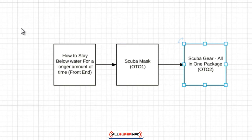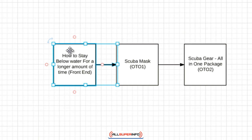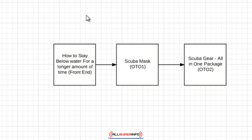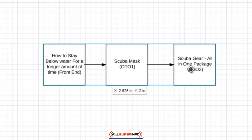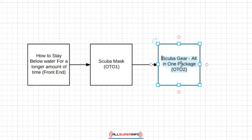They go through the course and get educated. Then you present the scuba mask that helps them do just that. After they buy, you say, 'We normally sell the full scuba gear all-in-one package for such and such price, but you'll get 50% off if you buy right now.' They're already in the right frame of mind — they're well educated, they trust you because you educated them, and because they trust you, they're more likely to buy your product.